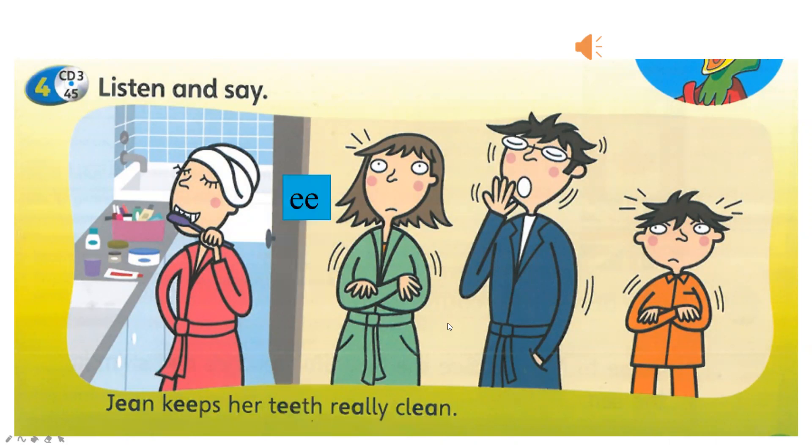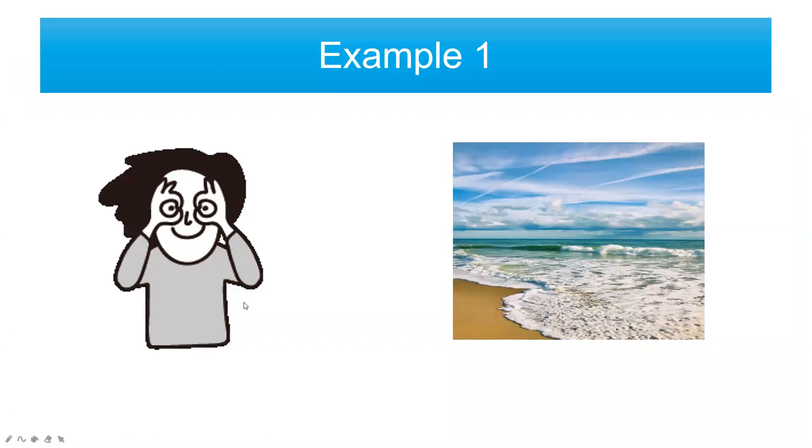So boys and girls, we have the 'ee' sound. Both are 'ee' sounds. Let's continue with some examples here. We have 'sea' S-E-A, another one also 'see' S-E-E. Both are similar sounds. 'See' and at the beach we have 'sea' at the seaside.